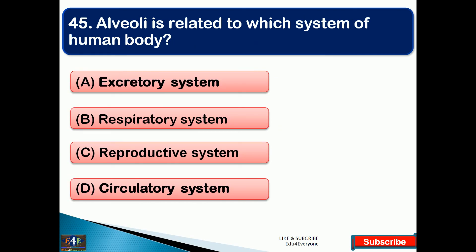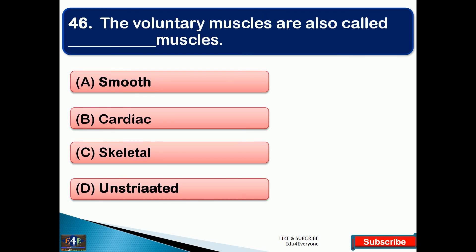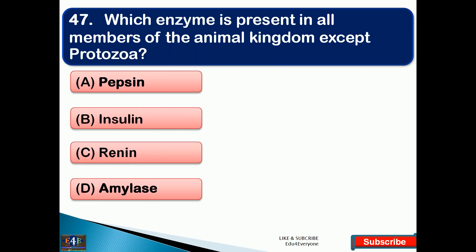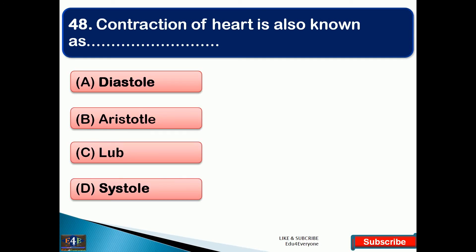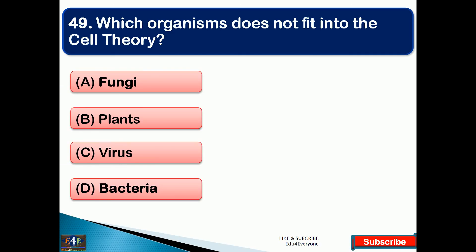Alveoli are related to which system of the human body? The right answer is option B, that is the respiratory system. The voluntary muscles are also called — the right answer is option C, that is skeletal muscles. Which enzyme is present in all members of the animal kingdom except protozoa? The right answer is amylase. Contraction of the heart is also known as — option D, that is systole. Which organism doesn't fit into the cell theory? The right answer is option C, that is virus.